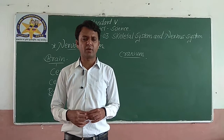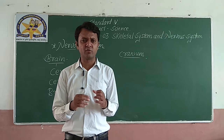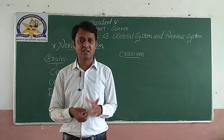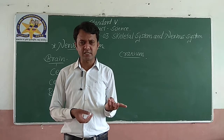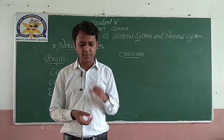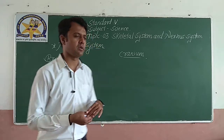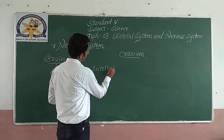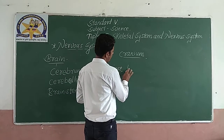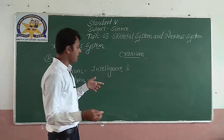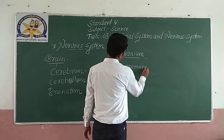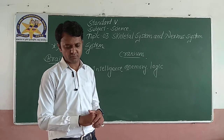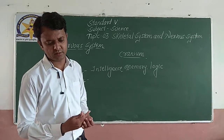Cerebrum is the largest part of the brain. The grey-coloured part you see in a diagram of the brain is the cerebrum. It controls intelligence, emotions, memory, logic, and problem-solving.